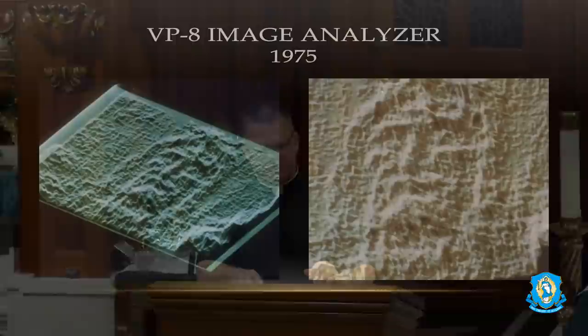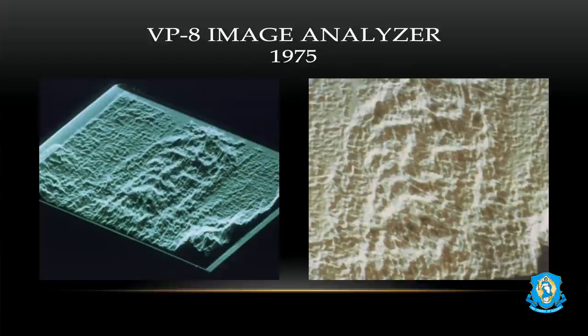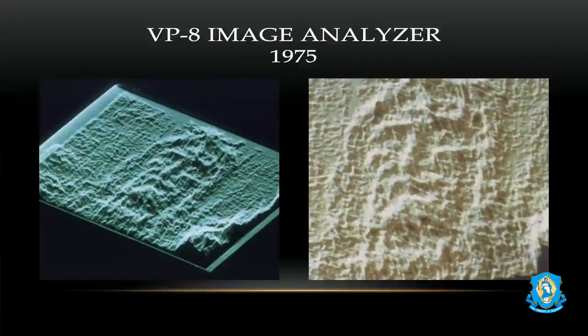In 1975, science analyzed through a NASA tool called the VP8 Image Analyzer the face on the image of the Shroud of Turin. It looks like a clay mold — it has a 3D effect. But the shroud is a 2D image. When they analyzed it with this VP8 Image Analyzer, they were shocked. It was the only 2D image in the world they've ever seen with 3D information.